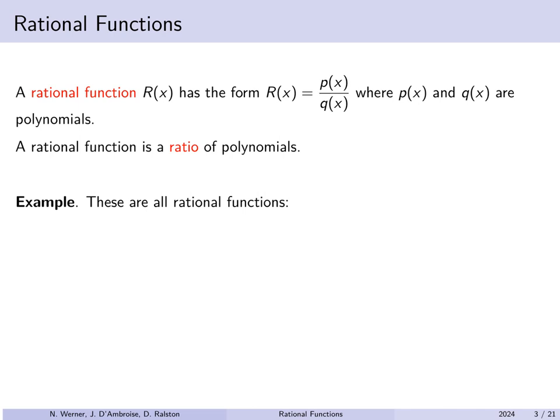Here are some examples of rational functions. First, F of x equals 1 over x. 1 is a polynomial of degree 0 — it is a constant — over x, a polynomial of degree 1. G of x equals 1 over x squared. Again, the numerator 1 is a polynomial of degree 0, a constant, and the denominator x squared is a polynomial of degree 2.